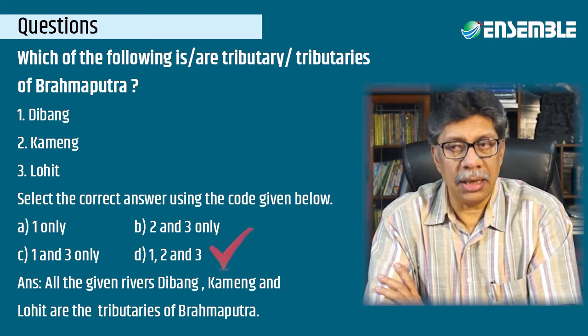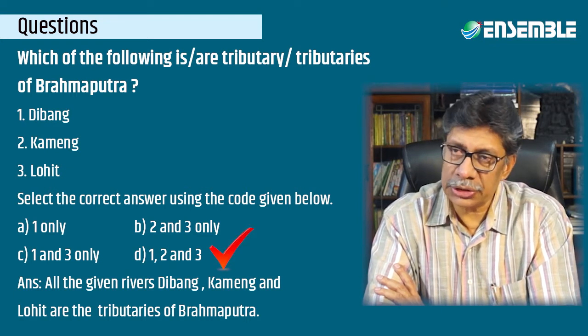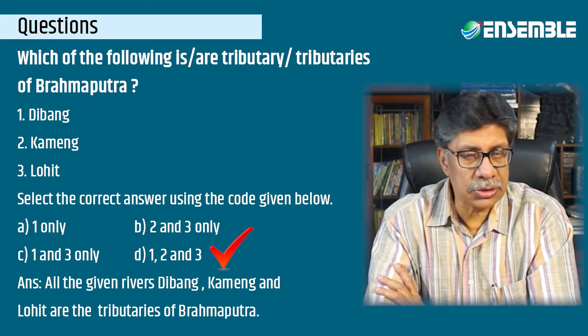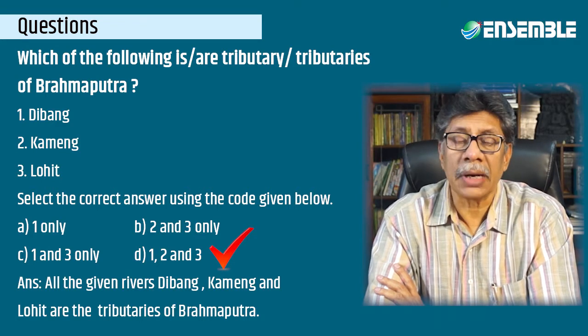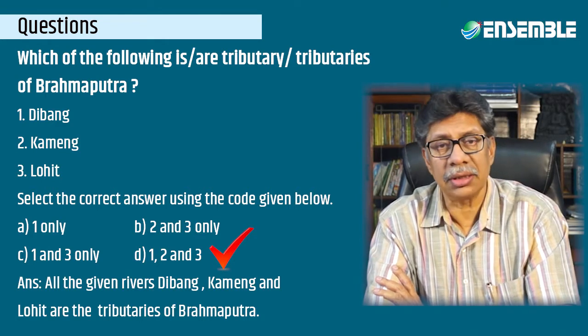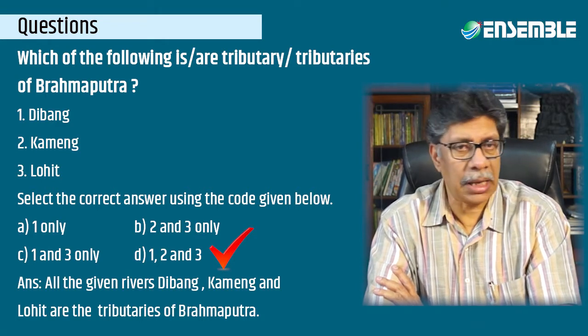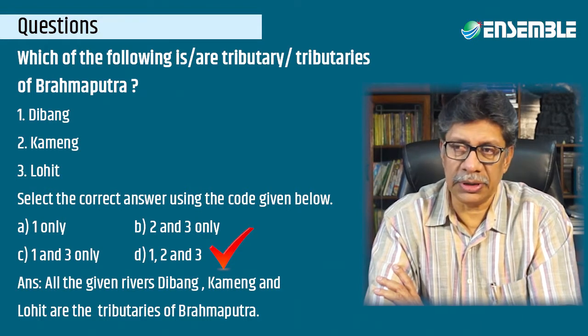The full list of Brahmaputra tributaries includes Dihang, Dibang, Lohit, Sankosh, Manas, Subansiri, Tirsa, Torsa, Jaldhaka, Tista, and Radha — all of them are tributaries of the Brahmaputra in India.